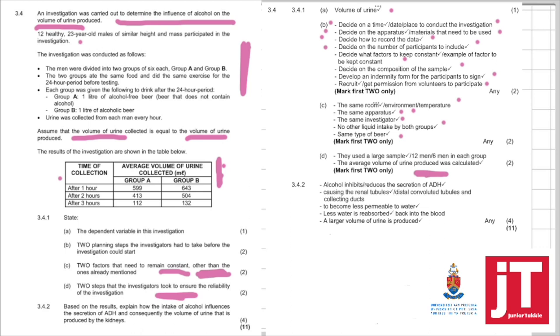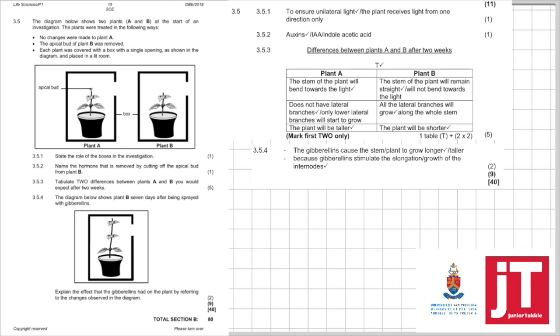3.4.2. Based on the results, explain how the intake of alcohol influences the secretion of ADH and consequently, the volume of urine that is produced by the kidneys. What a lovely question. Amazing, amazing question. I love this question. I'm not sure if you know this, but alcohol reduces the secretion of ADH. It causes the renal tubules to become less permeable to water and more water is lost in the urine. So, a male, or a person that drinks alcohol can lose a lot of water and can eventually become dehydrated. Make a note of this question. This is very nice for you to know. And that was question 3.4. That was a nice question.